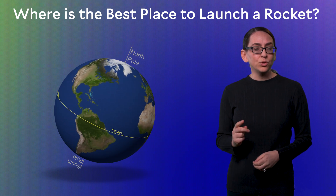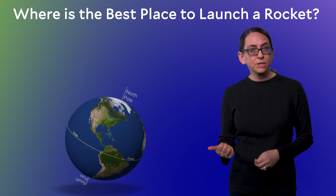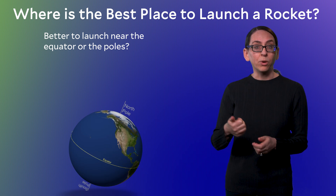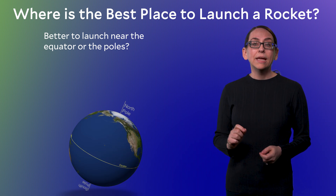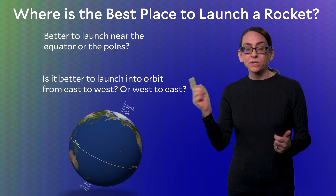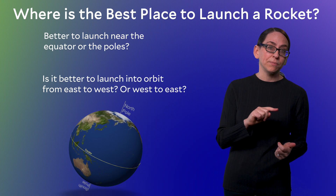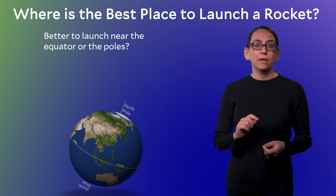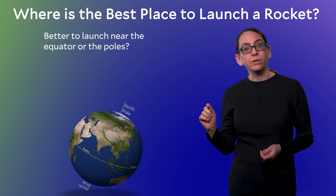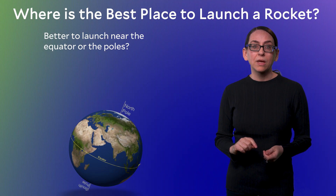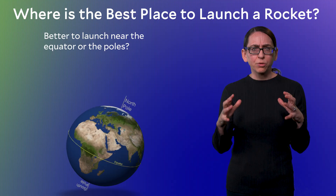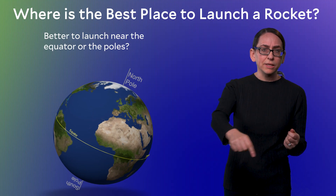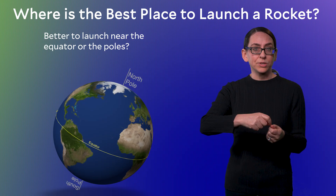So let me ask you two questions. First, is it better to launch a satellite into orbit near the equator or near the poles? And second, is it better to launch into orbit from east to west or west to east? Let's tackle the first question first: is it better to launch a satellite into orbit near the equator or near the poles? So imagine the Earth rotating around on its axis. At any point on Earth, it completes a circle every 24 hours.